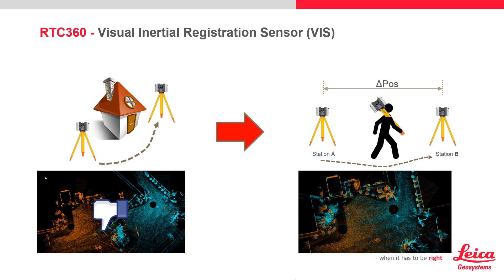When these two scans come into the processing software, both scans are in the correct location with the correct rotation. By removing or minimizing the office registration process, this can greatly improve your ROI on your projects.